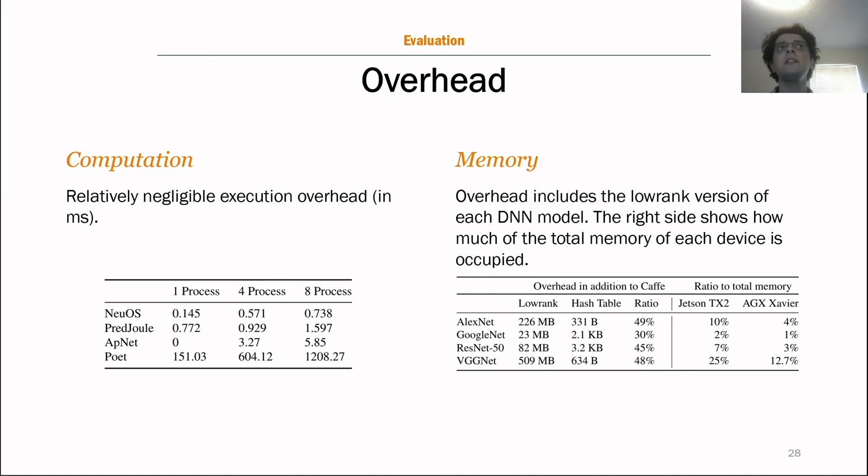And we also measure our overhead, both in terms of computation and memory overhead. So the computation overhead is, as you can see, relatively negligible. It's in microseconds. Relative to the execution time of the DNN instances, this is for AlexNet. And on the right, you can see the memory overhead for all the DNNs that we use. So what is unavoidable is the low rank. But you can see on the right, we have also included the ratio to total memory, which shows that comfortably you can have up to eight instances of even the largest one, VGGNet, on the AGX Xavier and the TX2.